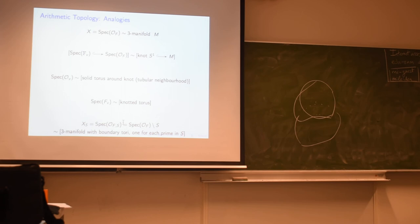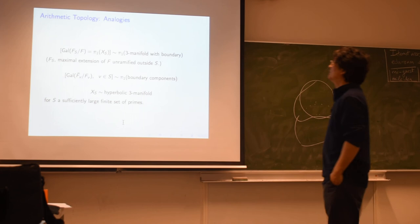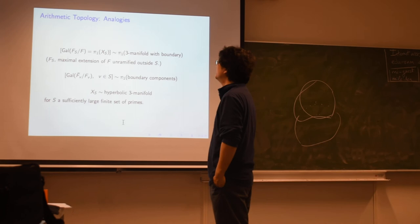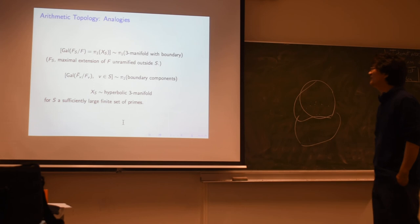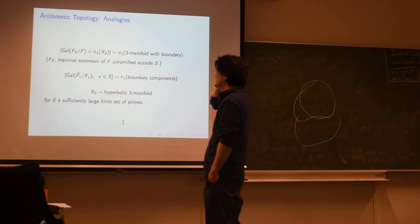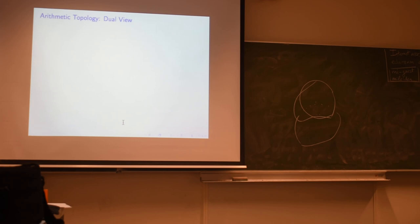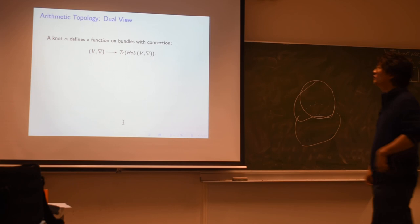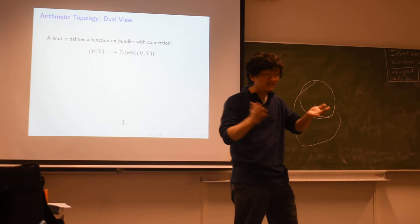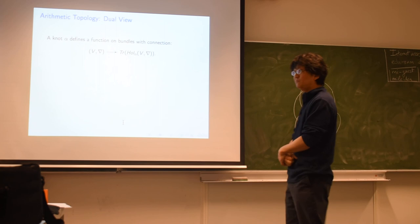The fundamental group of X_S, the ring of S-integers, will be the Galois group of the maximal extension unramified outside S. It's supposed to be like π_1 of a 3-manifold with boundary. Then the Galois group of the local fields should be like π_1 of the boundary components. And if you remove sufficiently many primes in S, most of the time it should be like a hyperbolic 3-manifold. That's an old analogy that's been discussed since the 1960s. But there's also a dual view, which is described in Professor Morishita's wonderful book.